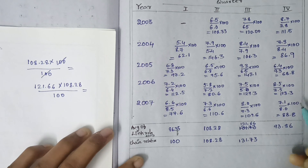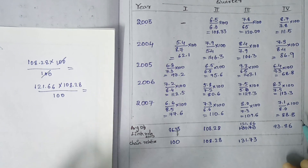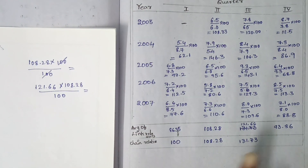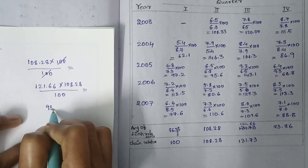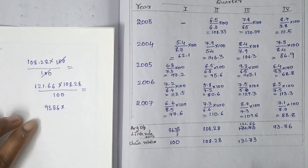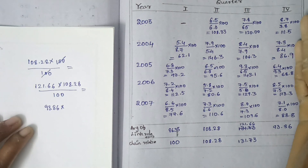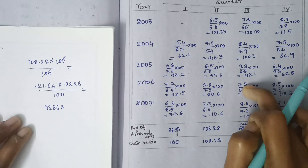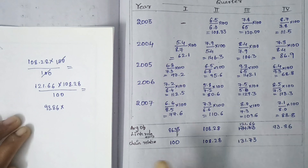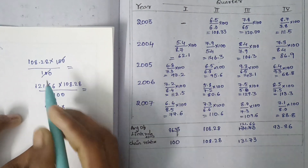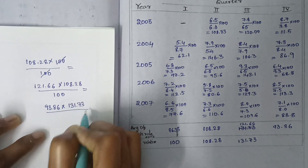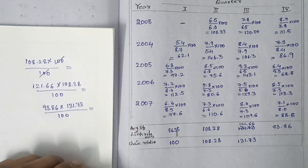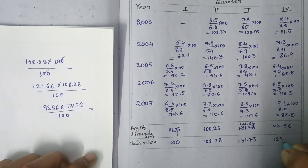This is the last period. The fourth period uses the same formula. The average link relative is 93.86. Multiplied by the chain relative of the previous period — the third period — which is 131.73, multiplied by 100. If we calculate it, we get 123.64. Therefore, 123.64 is the chain relative for the fourth period.